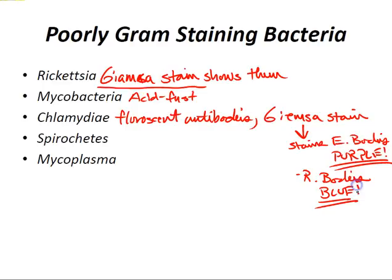Spirochetes are spiral-shaped bacteria not readily visible on gram stain due to their small diameter, though they are classified as gram-negative bacteria. These organisms include Treponema, Leptospira, and Borrelia. Mycoplasma species lack a cell wall and do not gram stain — immunofluorescence or Giemsa stain must be used for visualization.